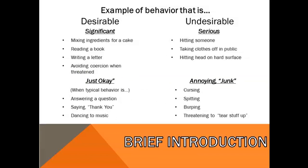Some more examples by category: significant desirable behaviors include mixing ingredients for a cake, reading a book, writing a letter, avoiding coercion when threatened. Just-okay behaviors include answering a question, saying thank you. Serious behaviors include getting hit or illegal acts like taking your clothes off in public. Annoying junk behaviors include cursing, spitting, burping, threatening — though depending on context those could move to serious; for example, spitting on a cop is illegal and therefore serious. Based on context, behavior can be categorized, and that helps us determine the best response.